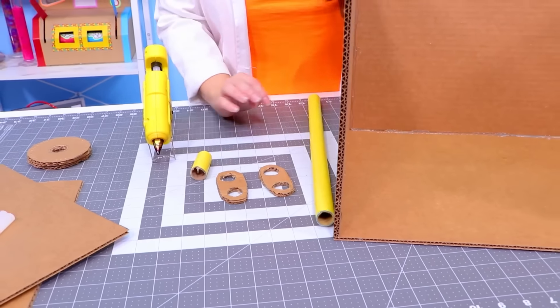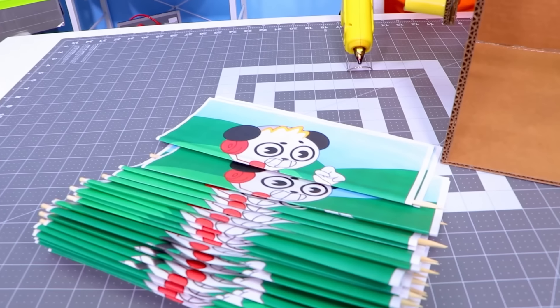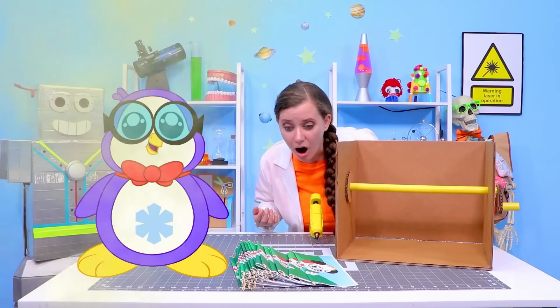Alright, now we're gonna glue our handle onto our center tube! We need lots of hot glue for this one too, to make sure everything is nice and tight! Once it's dry, it should spin like this! Whoa, it's working so good! And we already have our reels made, so all that we need is the animation. Wait!